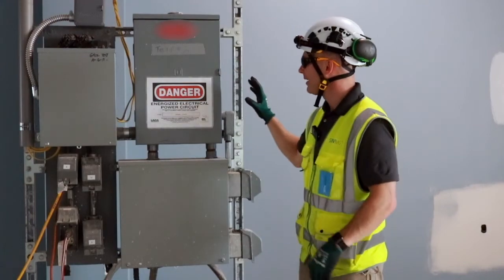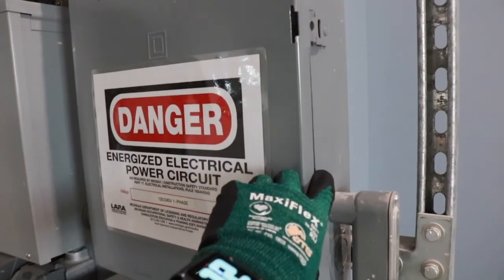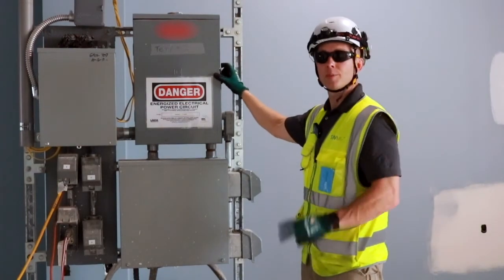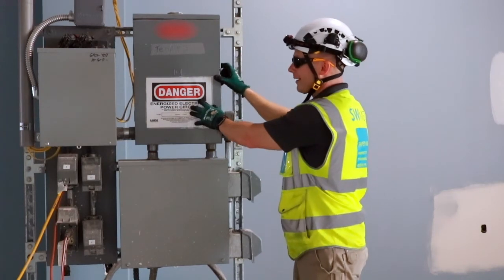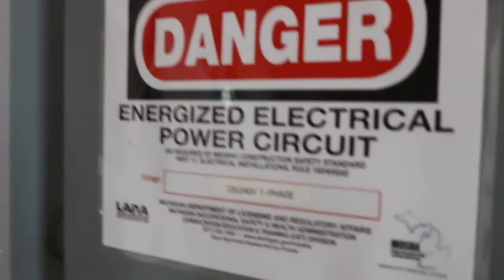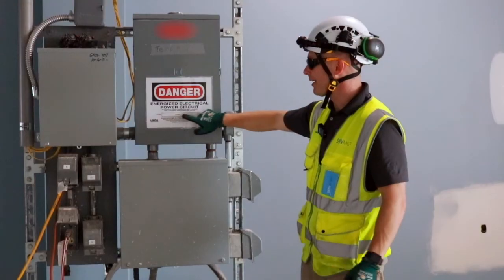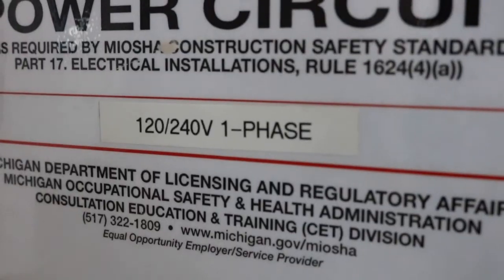Practice number one, each panel has an outer cover on it. These guys did a great job putting that on. Practice two, they've identified an accident prevention sign by putting it on the outer cover. Practice three, they've included the voltage of the panel.